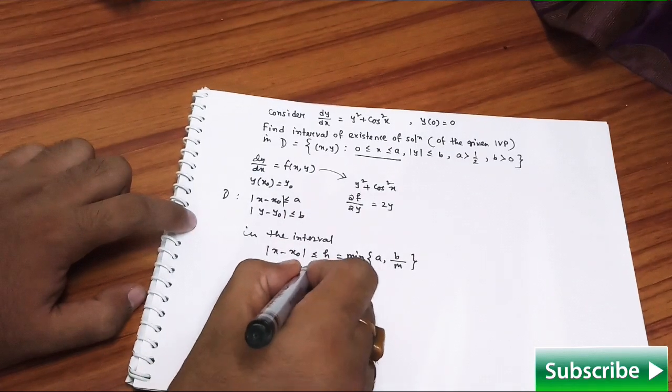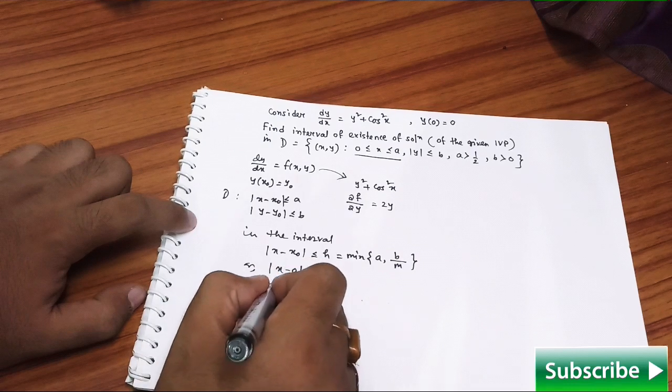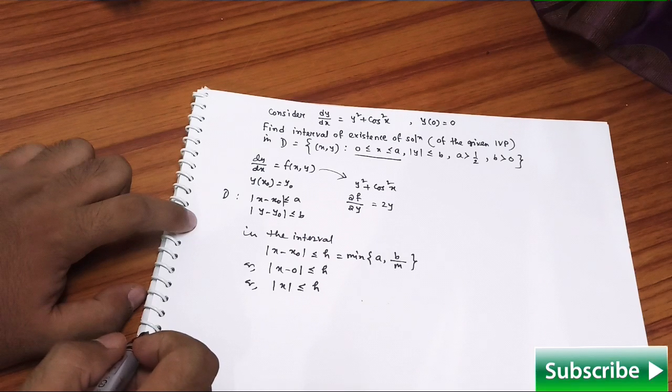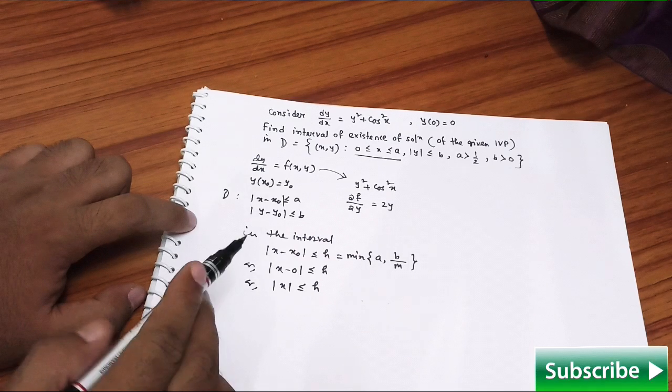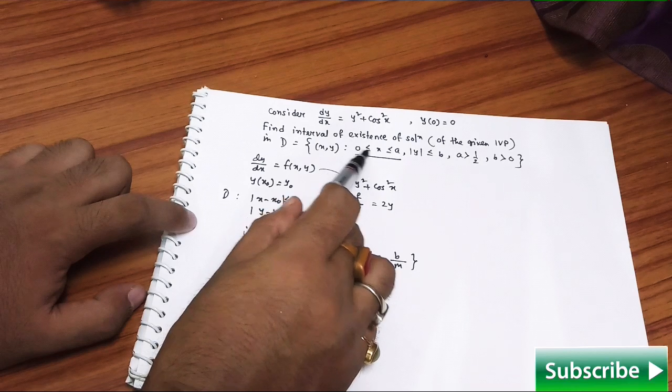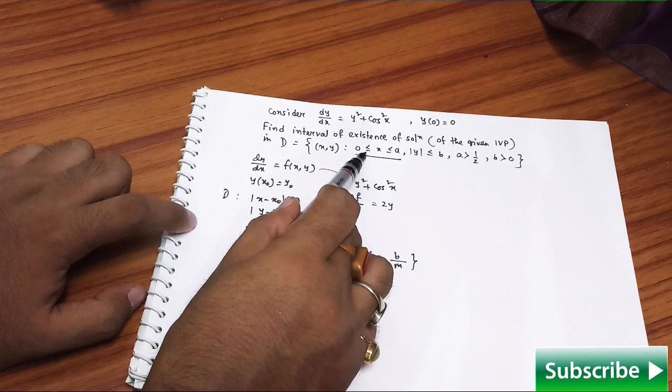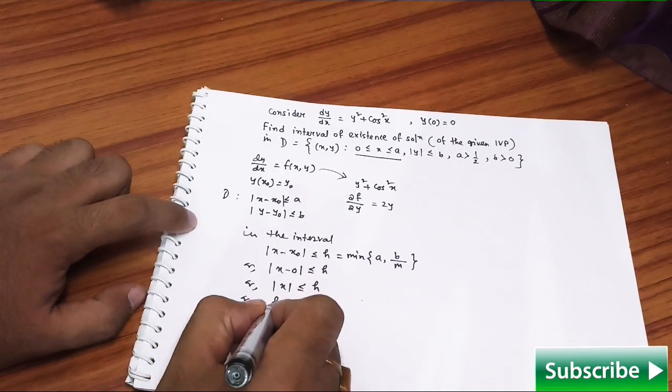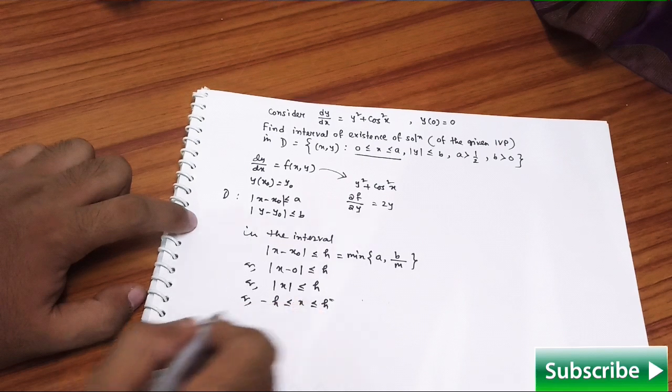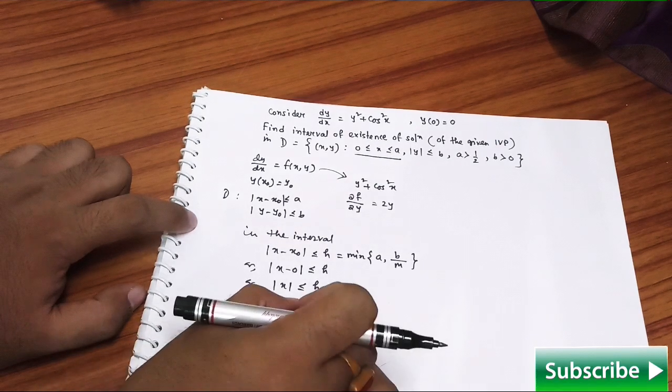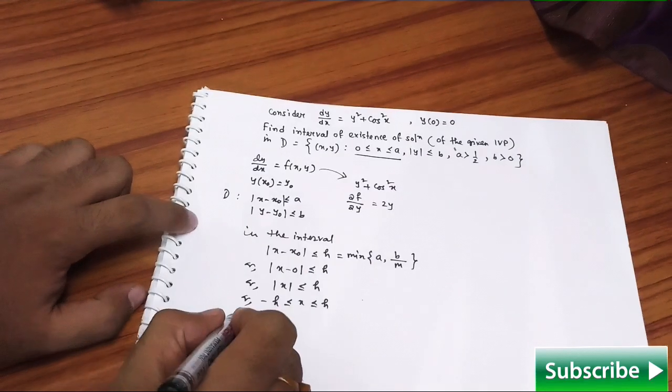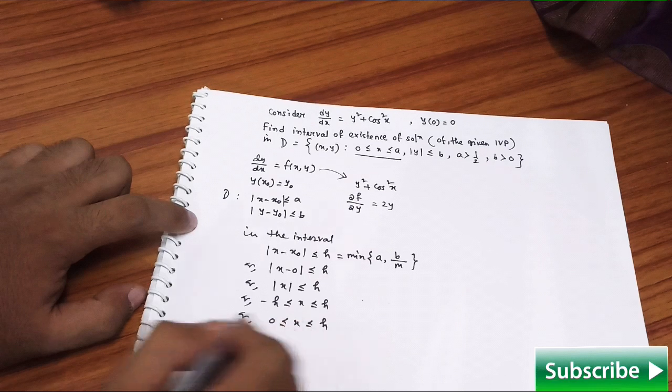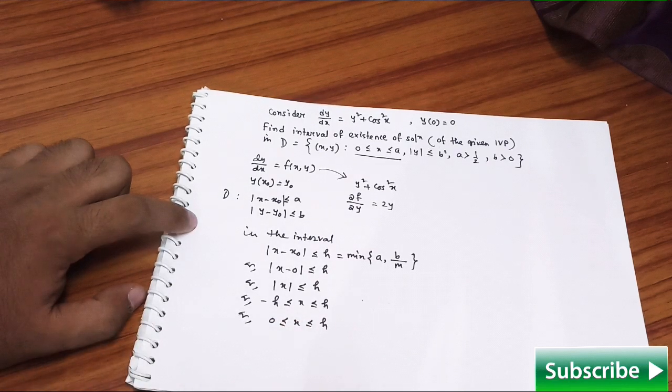Now just simplify here. Look at x₀: obviously x₀ means 0, so it is less than h. You can simply write |x| ≤ h. But look at the given domain - there is a restriction for x. It is strictly greater than 0 or equal to 0, no negative part. That means from here you will get this part, but because of that restriction, the interval reduces to this way, isn't it clear?